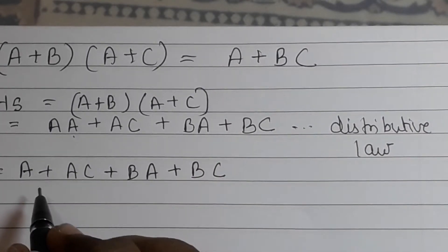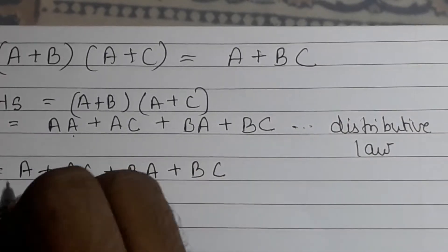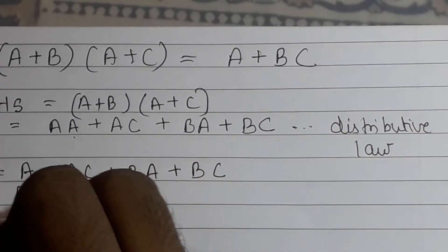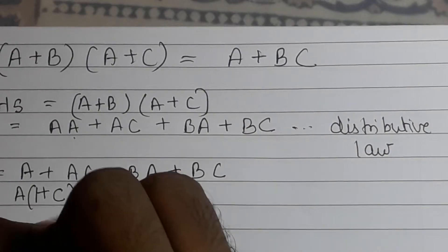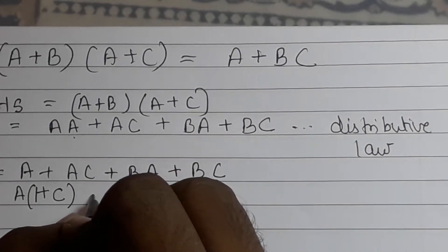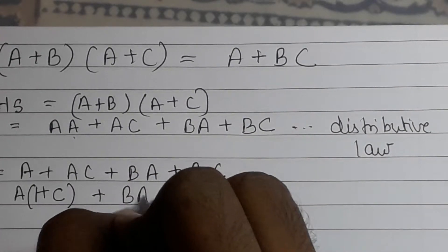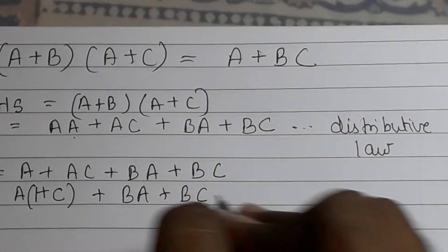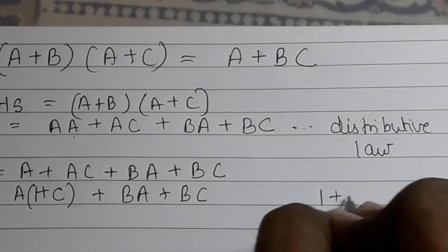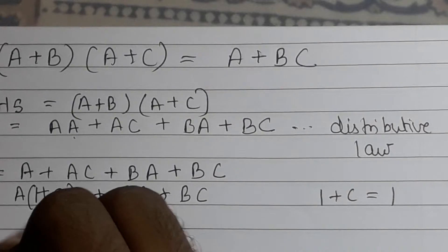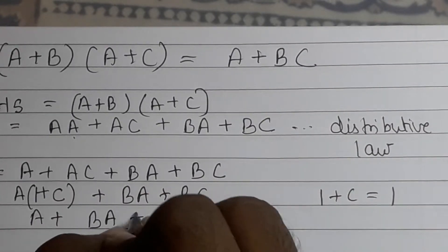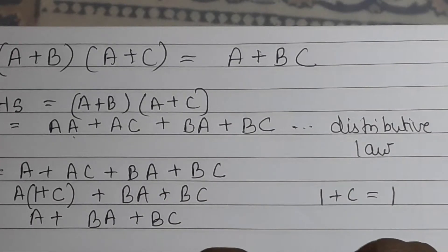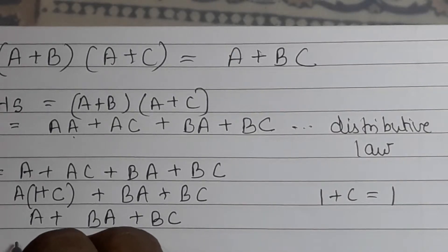Now from this we can take A as common from the first three terms: A(1 plus C plus B) plus BC. Since 1 plus C equals 1, we get A plus BA plus BC, and taking A common gives A plus BC.